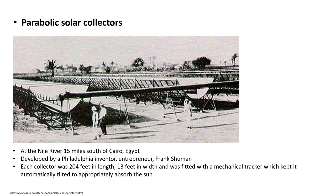The first parabolic solar collector was installed in 1912 at the Nile River, 15 miles south of Cairo, Egypt, by Philadelphia inventor Frank Schumann. Each collector was 204 feet in length and 13 feet in width, fitted with a mechanical tracker to tilt the panels appropriately to absorb solar radiation. The heat collected was used to produce steam and power large water pumps, producing the equivalent of 55 horsepower — capable of pumping 6,000 gallons of water per minute — bringing irrigation water from the Nile to vast areas of arid desert land.